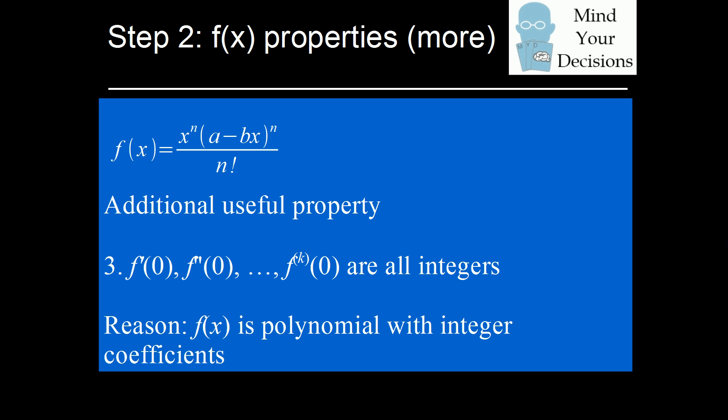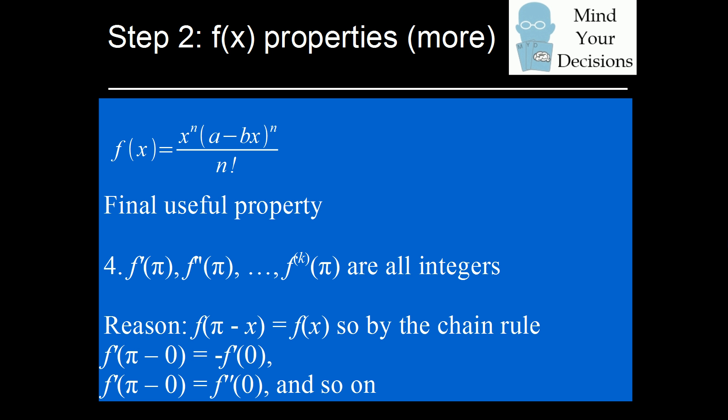Keeping this property in mind — that all of the derivatives of f evaluated at zero are integers — we can then derive the next property, which is that all the derivatives evaluated at pi will also be integers. This result follows from the fact that f of pi minus x equals f of x, which we showed earlier. We then use the chain rule to figure out the derivative of f evaluated at pi. It will be the opposite or the same value as the derivative evaluated at zero, and since those were integers, this will also be an integer.